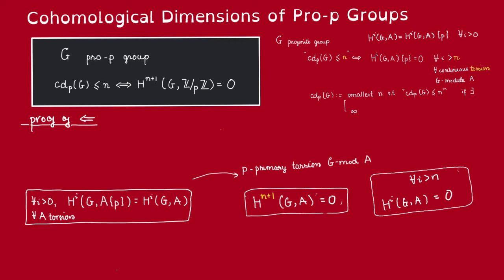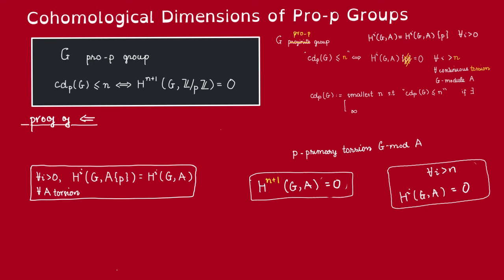Before proceeding, let us recall that if G is a pro-p group, then actually for all i greater than 0, these cohomology groups are p-primary torsion. So the condition here just becomes these cohomology groups vanishing. So let's suppose that we have the (n+1)-th cohomology group of G with coefficient in Z/pZ is equal to 0. Now we want to show that if we replace Z/pZ with an arbitrary continuous torsion G-module A, and n+1 with any i greater than n, the cohomology group is still trivial.